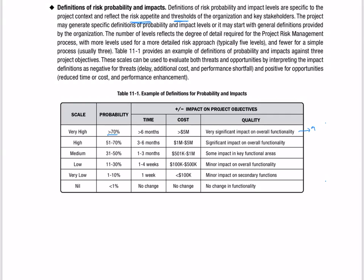Similarly, a high probability and impact is like 50 to 70%, and then the values are given as three to six months and a dollar value of $1 to $5 million — a significant impact on overall functionality. And then you've got the medium, low, very low, and nil categories.